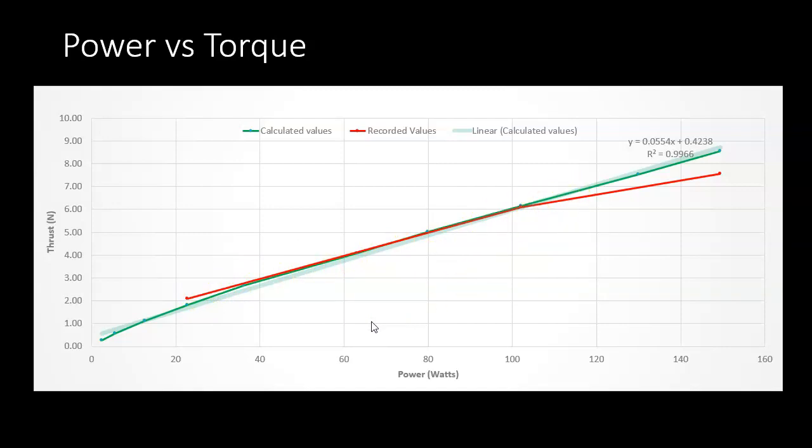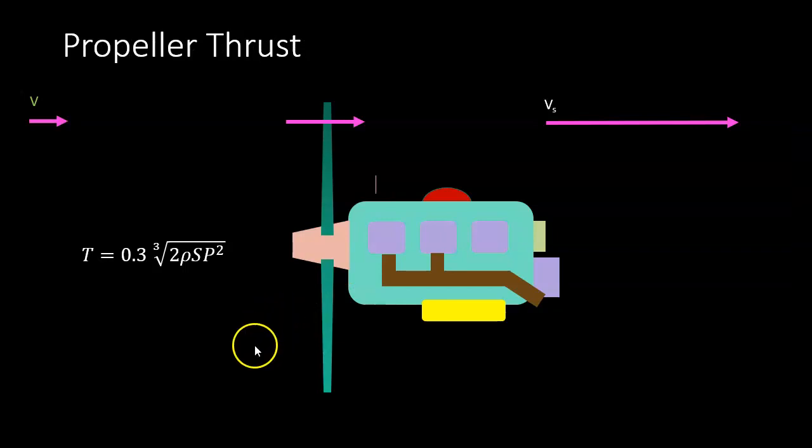I'm going to finish on this: the static thrust of a propeller is estimated to be 0.3 times the third root of 2ρS times the power of the engine squared. I'd be very interested to see if any remote controlled aircraft users out there have any readings or values that would support this or contradict this. Bye.